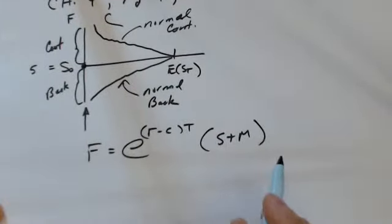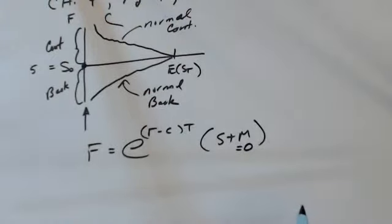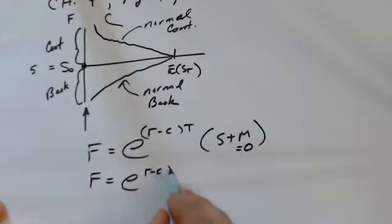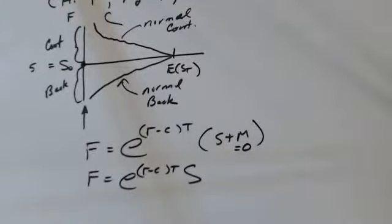Now, we can simplify things because the text basically assumes in this problem that M is zero. There's no other holding costs. And so the formula is this, that we want to deal with.